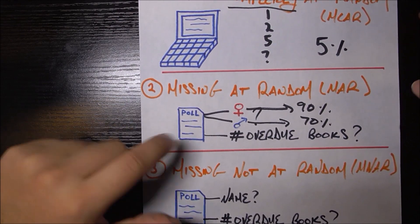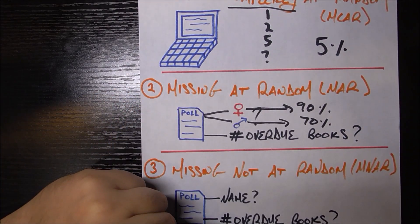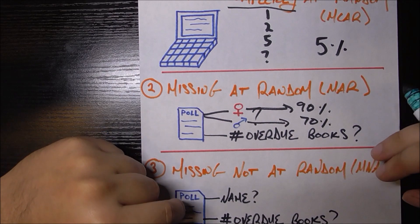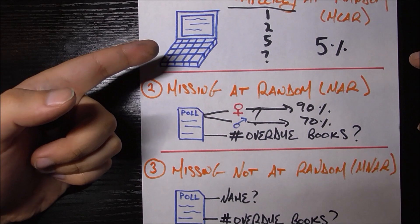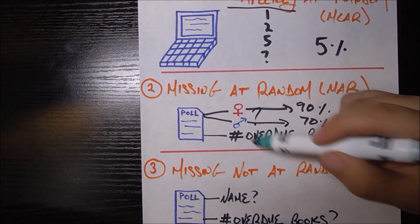This is a perfect example of a case where the data is missing at random. Because although we do have missing data overall, the rate of missing data can be perfectly explained if we know a certain other factor. In this case, it's the sex of the person.